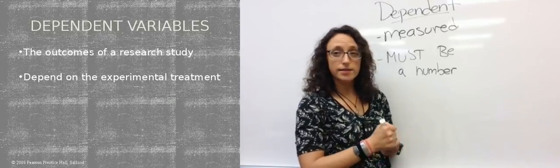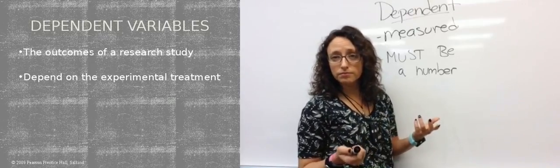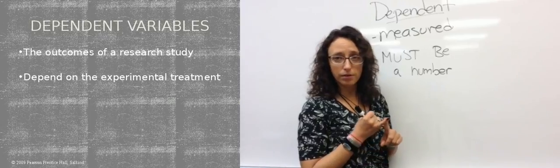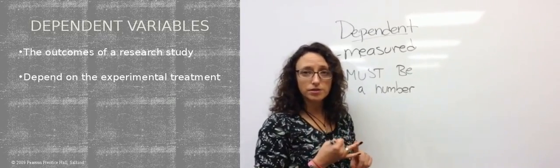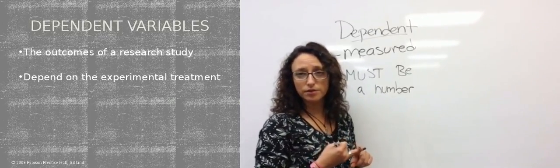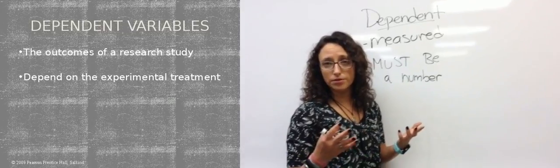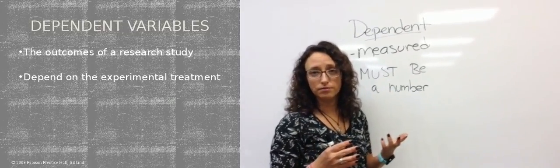So things like weight can be a dependent variable because it's a number. People cannot be dependent variables. Animals cannot be dependent variables. Those cannot be made into numbers. It has to be something that's measured.